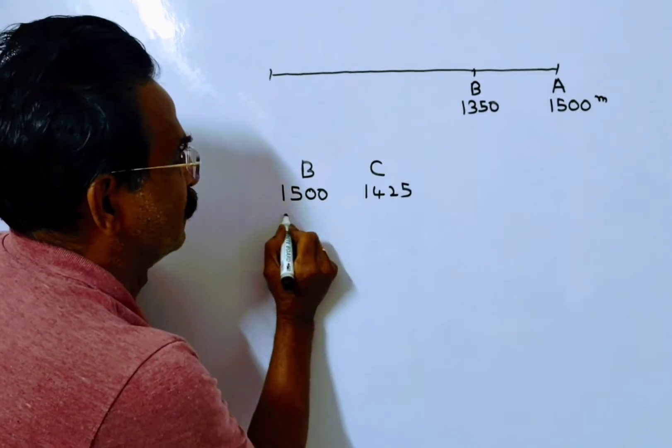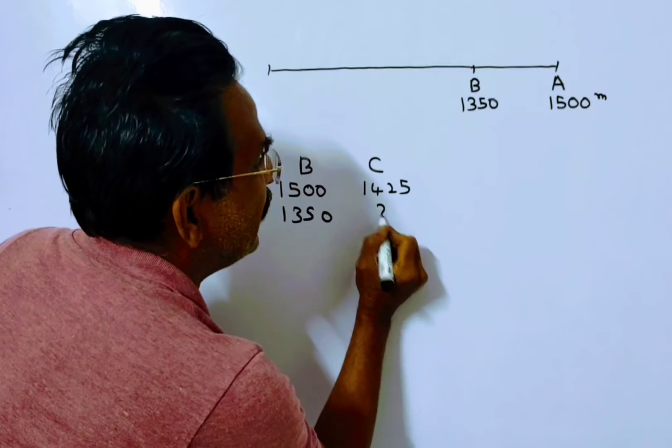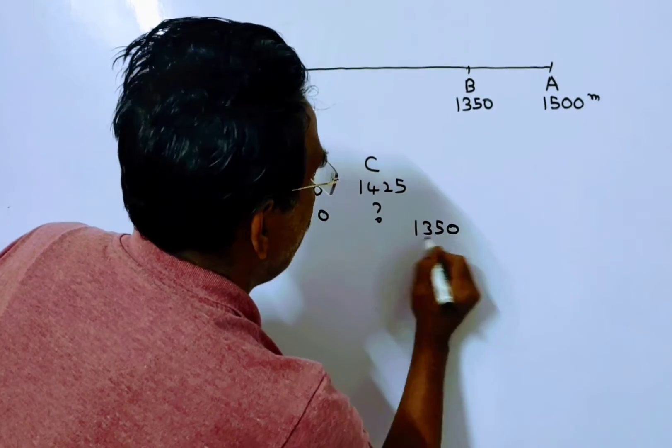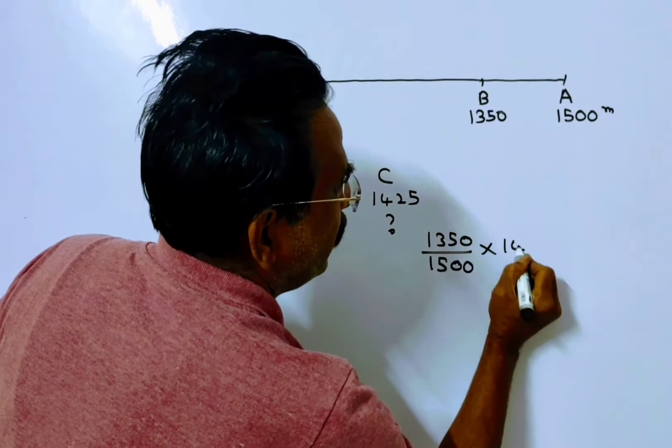If B travels 1350 meters, if B travels 1350 meters, C travels how many meters? Yes, 1350 upon 1500 into 1425.